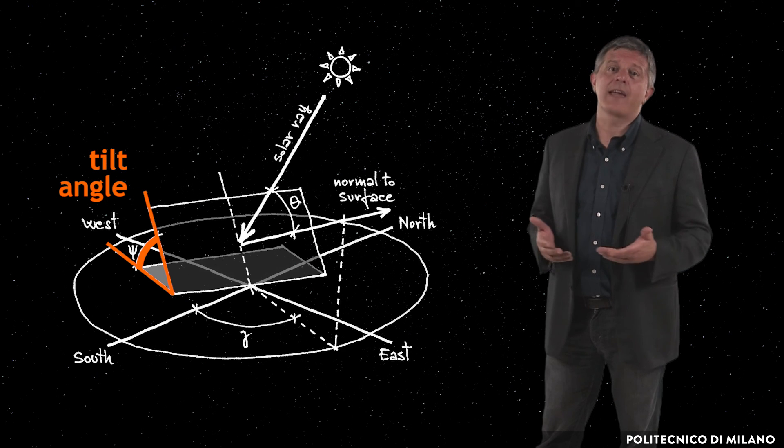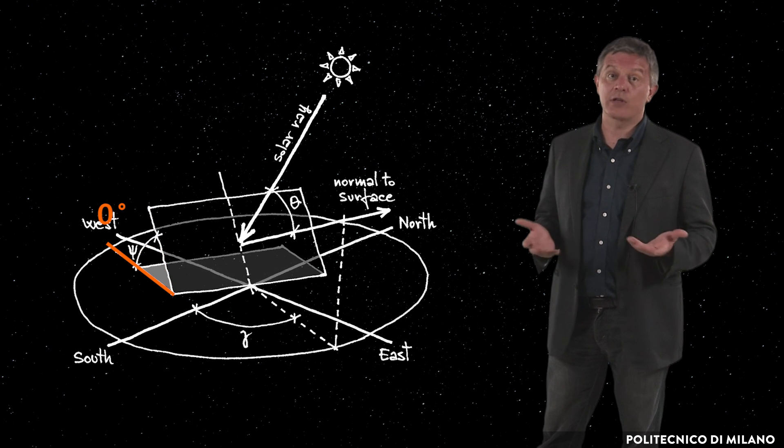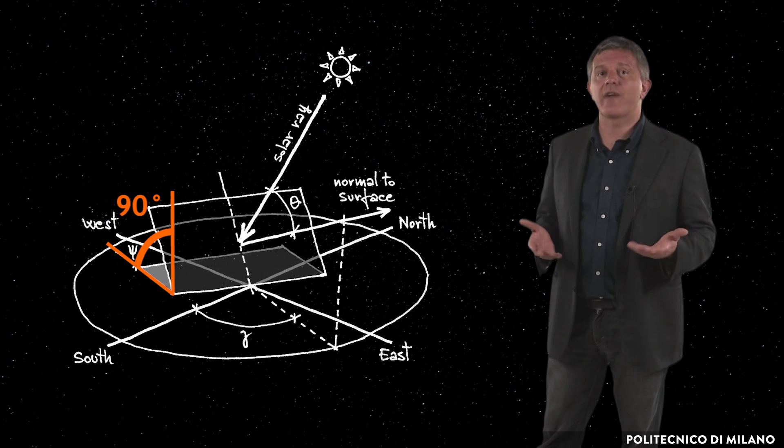Psi, tilt angle of the surface, indicates the angle formed by the surface with the horizontal plane. It is zero degrees for horizontal and 90 degrees for vertical arrangement.